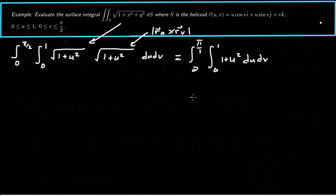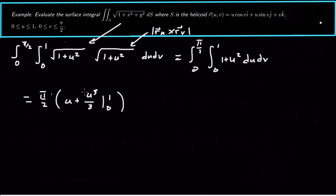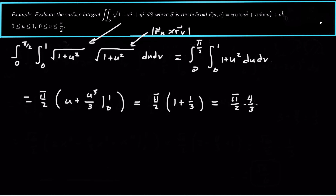This integral is pretty easy. It becomes (π/2) times [u + u³/3] evaluated from 0 to 1. Doing the v integral gives the factor π/2, and the u integral gives 1 + 1/3 = 4/3. So the result is (π/2) × (4/3) = 2π/3. That is our surface integral.